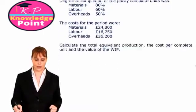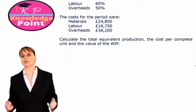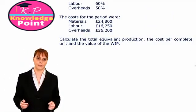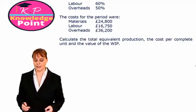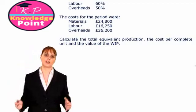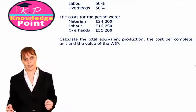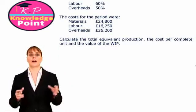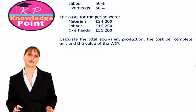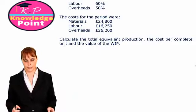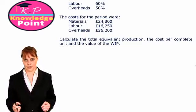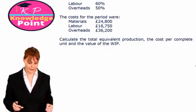In addition, we are told how much we have spent on each of those three cost types for the period. We are being asked to calculate the total equivalent production — our statement of equivalent units — and then to do our valuation of our completed units and our closing work in progress. So just the same three steps we've seen in previous exercises.